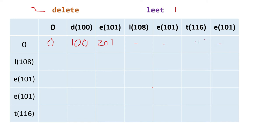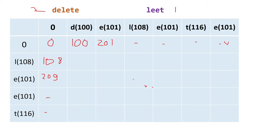Similarly, for the first column, if the other string is empty and our string has 'l', the value is 108; for 'le' it's 108 plus 101 = 209; and it keeps growing as a cumulative sum. The first row and column represent deleting all characters of one string while the other is empty. Now I'll explain how to fill any random cell in the table.